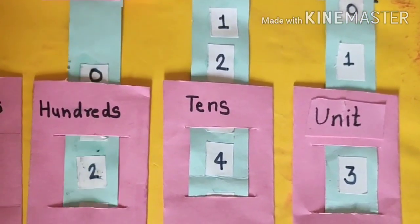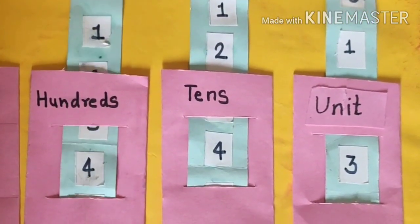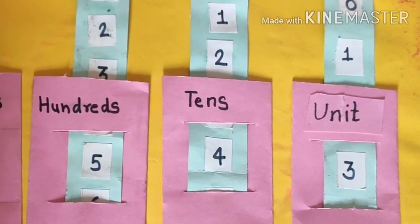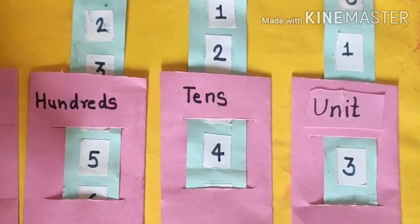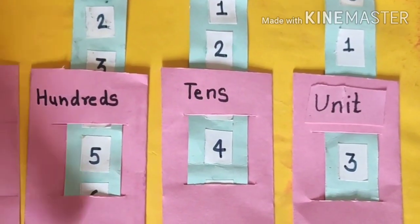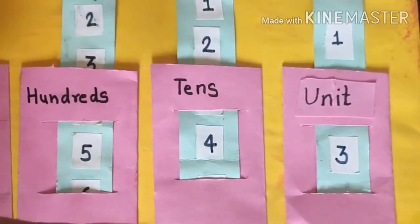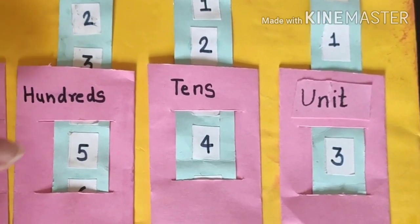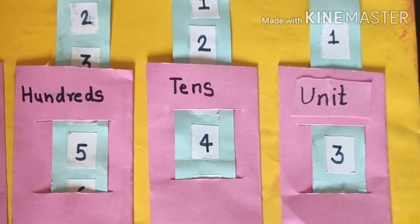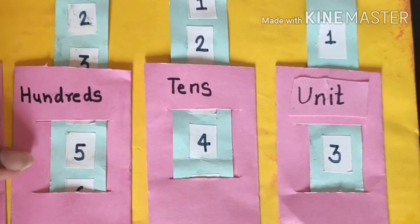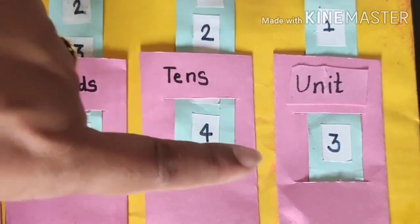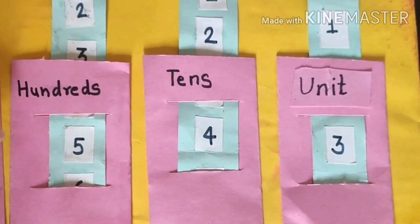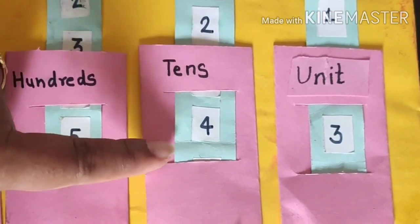Now here comes another number. It's 5. Now we have our 3-digit numbers — 1, 2, 3. This is our 3-digit number, and 5 is at the 100th place. So we read this number as 543. I am repeating: 543.